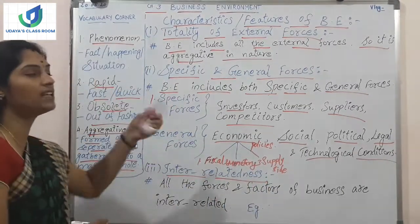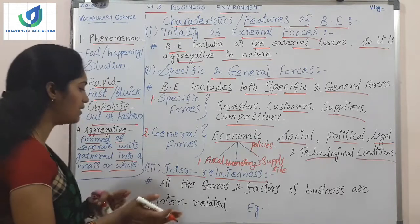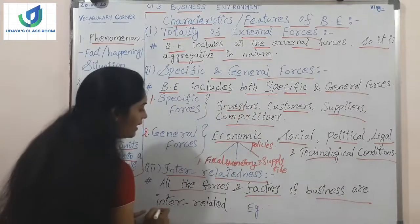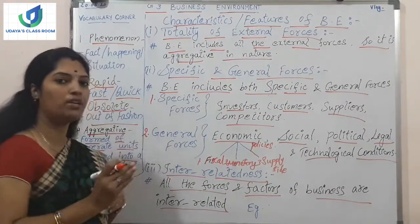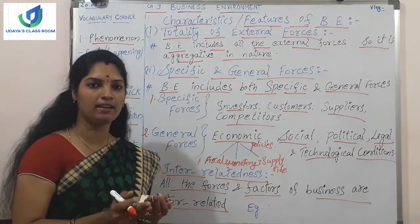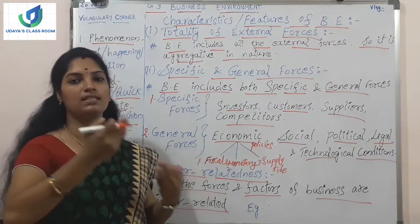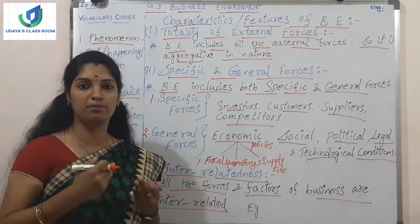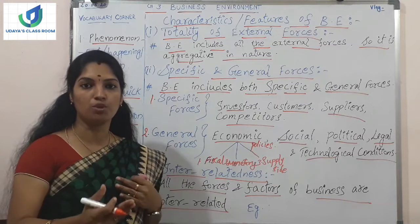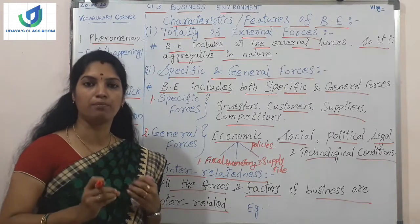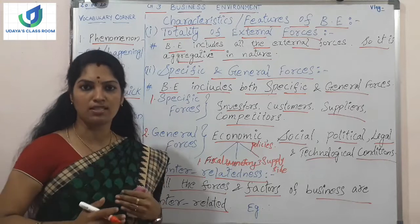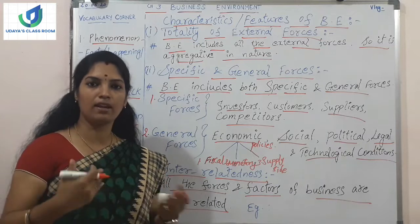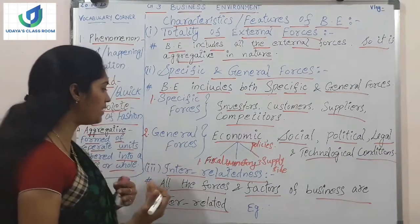The next feature is interrelatedness. Business environment has interrelatedness — all the forces and factors of business are interrelated. If the consumer changes, it will affect the business, and if the business changes, it will affect the consumer. Suppose a business stops its production when consumers are consuming the same product continuously — the consumer gets affected. Each and every thing has interrelatedness.